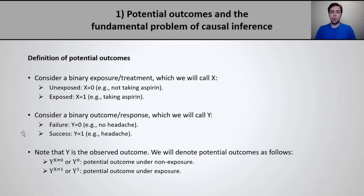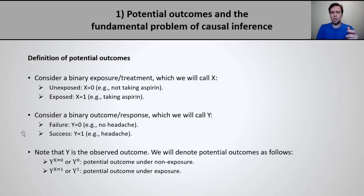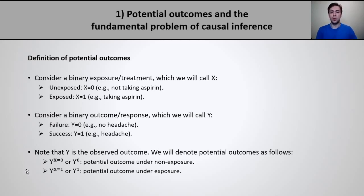In our example the outcome is headache, so outcome success is having a headache and failure is no headache. Note that this language of failure and success does not necessarily correspond to a desirable or undesirable outcome — for example, if the outcome is death, then success would be dying and failure would be surviving. This is really a definitional issue that is arbitrary. Note that y here is the observed outcome. We will use a slightly different notation for potential outcomes: y superscript 0, or y0, denotes the potential outcome under non-exposure, while y1 denotes the potential outcome under exposure.